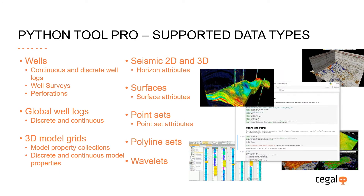Python 2 Pro supports a range of Petrel domain objects, namely wells, well logs, well surfaces and perforations, discrete and continuous global well logs, 3D model grids and discrete and continuous model properties, 2D and 3D seismic and horizon interpretation attributes, surfaces and surface attributes, point sets and their attributes, polyline sets, and wavelets. We are planning to incorporate more and more data types going forward.